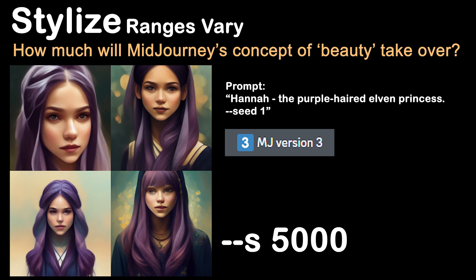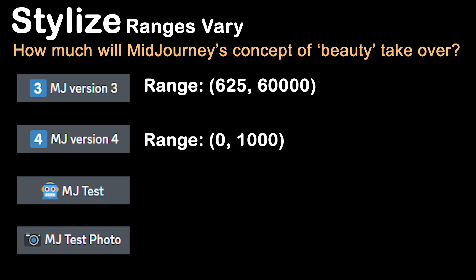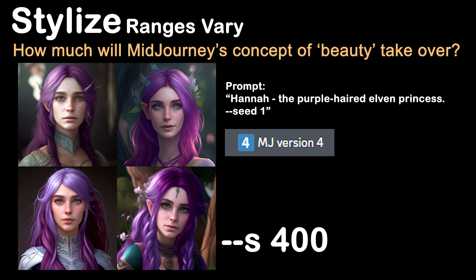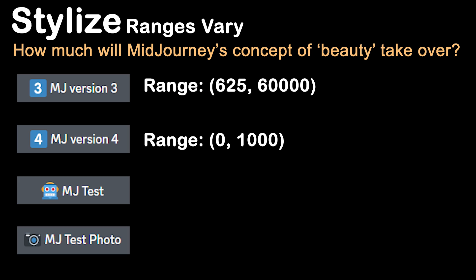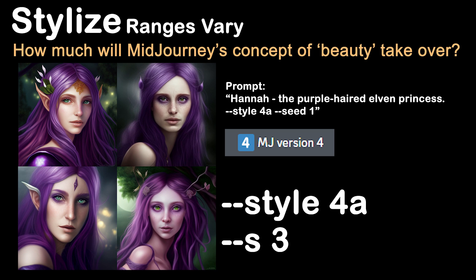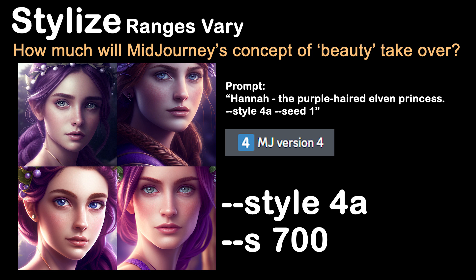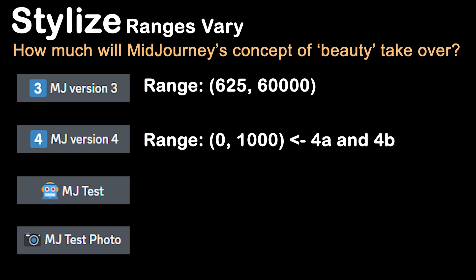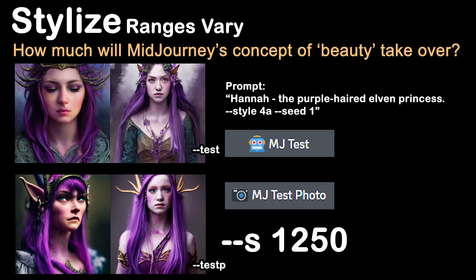Let's quickly look at how these affect Hannah. Version 4 uses 0 to 1,000. The effect is a little less obvious here because it changes the most right at those very low numbers. Version 4 also has two style options: 4A and 4B, accessed via --style 4a or --style 4b. This is because they weren't really happy with their initial implementation of stylize on this version, but they didn't want to take the option away from anyone who liked it. The test models both use stylized numbers from 0 to 5,000, but the difference isn't huge.